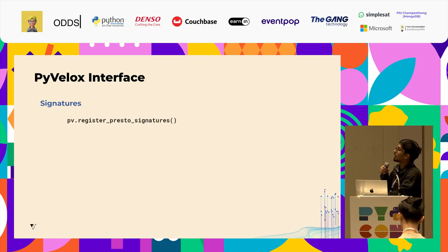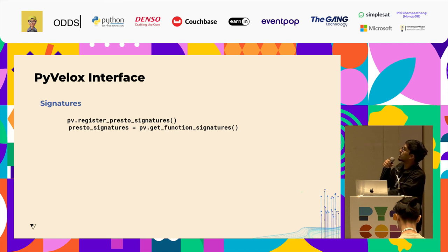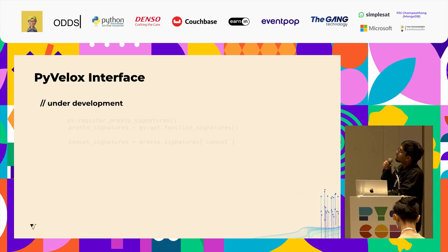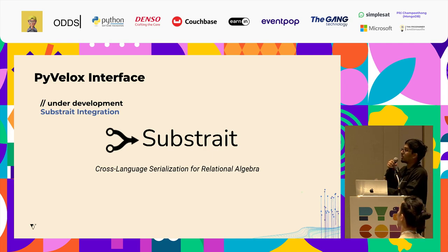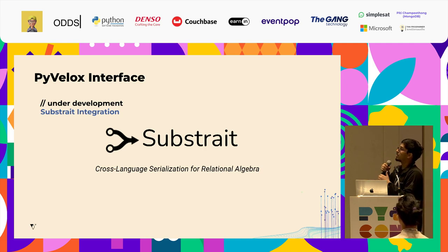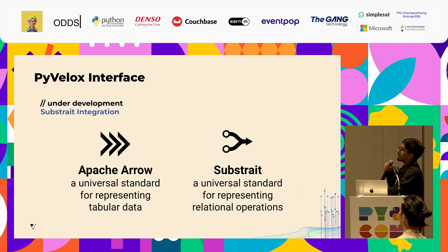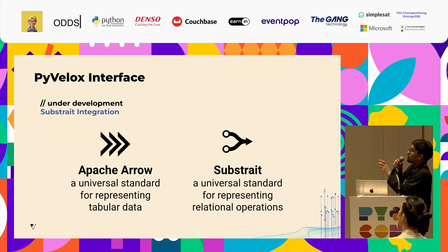PyVelox has a lot of signatures — if you want a very specific function from a specific data engine or database to run within the Velox engine, you can register those functions and then call them in the Velox engine. An important development in the Velox architecture is its integration with Substrait — a cross-language serialization for relational algebra. Since different dialects exist for different data architectures, we need a unified way to express data relations. Just as Apache Arrow is becoming a universal standard for representing tabular data, Substrait has a vision of becoming the universal standard for representing relational operations over that data. Apache Arrow and Substrait are two key blocks in developing a unified and composable data stack.